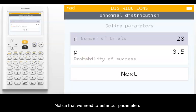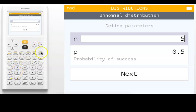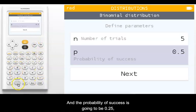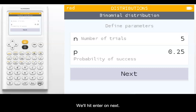Notice that we need to enter our parameters, the number of trials, which for us will be five. And the probability of success is going to be 0.25 since there were four regions and one of them was blue. We'll hit enter on next.